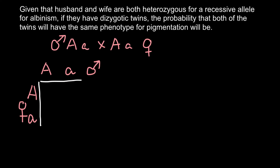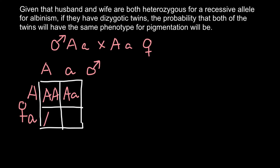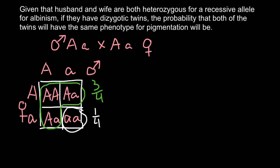When we build the Punnett square, we can see all possible variants in the progeny: capital A capital A, capital A small a, capital A small a, and small a small a. According to the Punnett square, three quarters of the progeny will be phenotypically normal and one quarter will be albino.